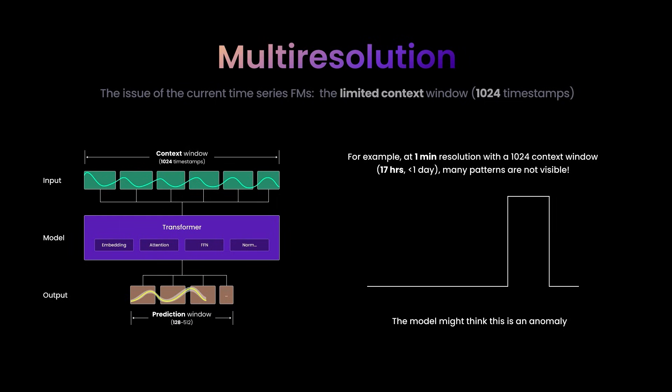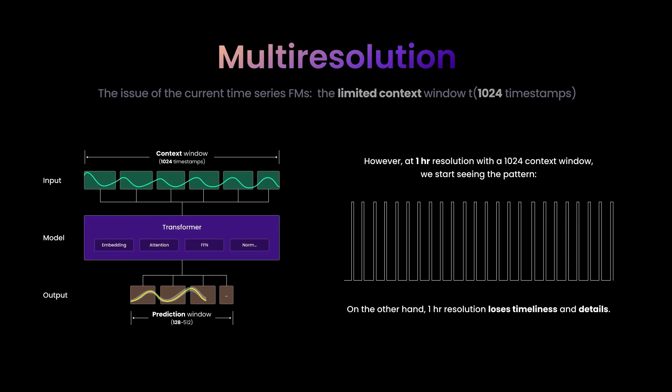All TSFMs only support processing a limited number of data points in the signal's history. With other TSFMs, you can choose to either use high-resolution one-minute data or low-resolution data, such as a one-hour aggregate. If you only use high-resolution one-minute data, you capture recent details but may miss critical seasonality curves. If you only use low-resolution data, you identify the seasonality but miss recent details and lack the near-term precision required for reliable alerting. This is an unacceptable trade-off.